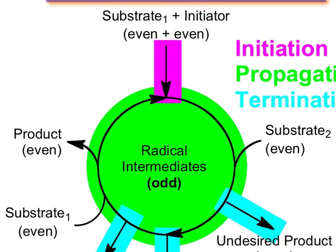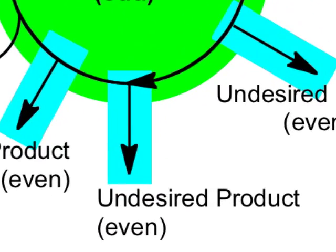Propagation, in which the products form and the aforementioned radical is regenerated. And termination, in which radicals combine with each other to form undesired, even electron side products.